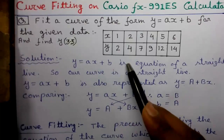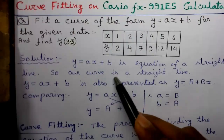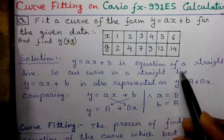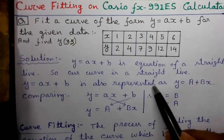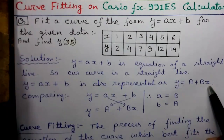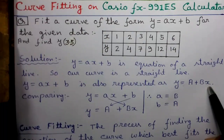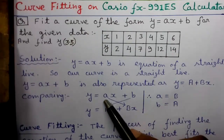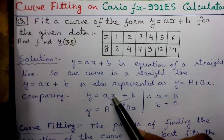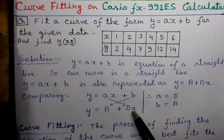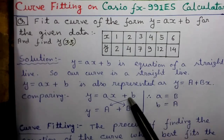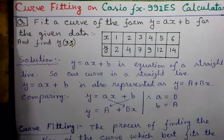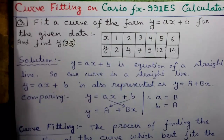Y = AX + B is the equation of the straight line, so our curve is a straight line. Y = AX + B is also represented as Y = A + BX. This representation is followed by the Casio calculator. And if you compare Y = AX + B and Y = A + BX, you will get small a equals capital B, and small b equals capital A. Now let's do the curve fitting on the scientific calculator.